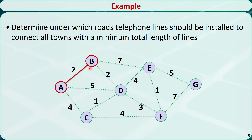Now let's find one unconnected node that is closest to A and B. The direct neighbors are C, D, and E. The closest is node D — the distance from D to B is 2. Let's connect B and D.